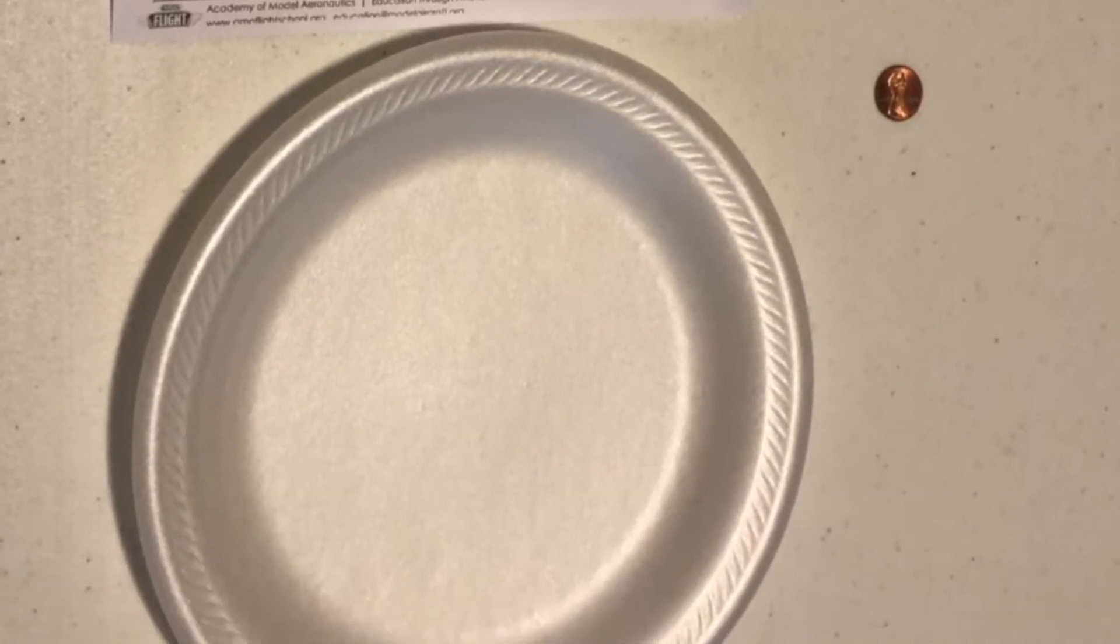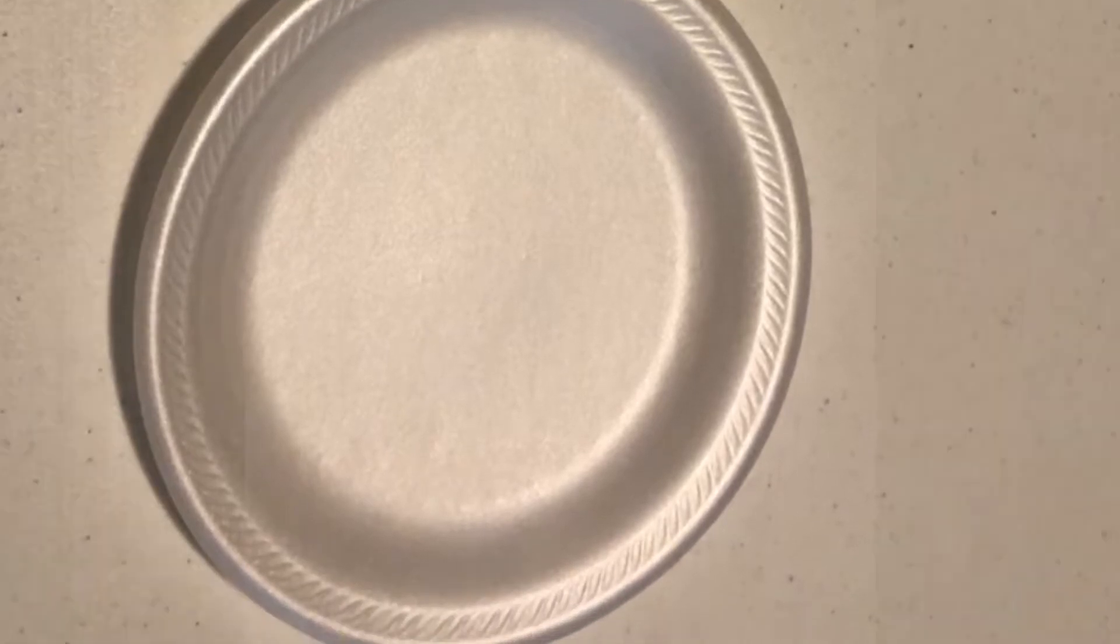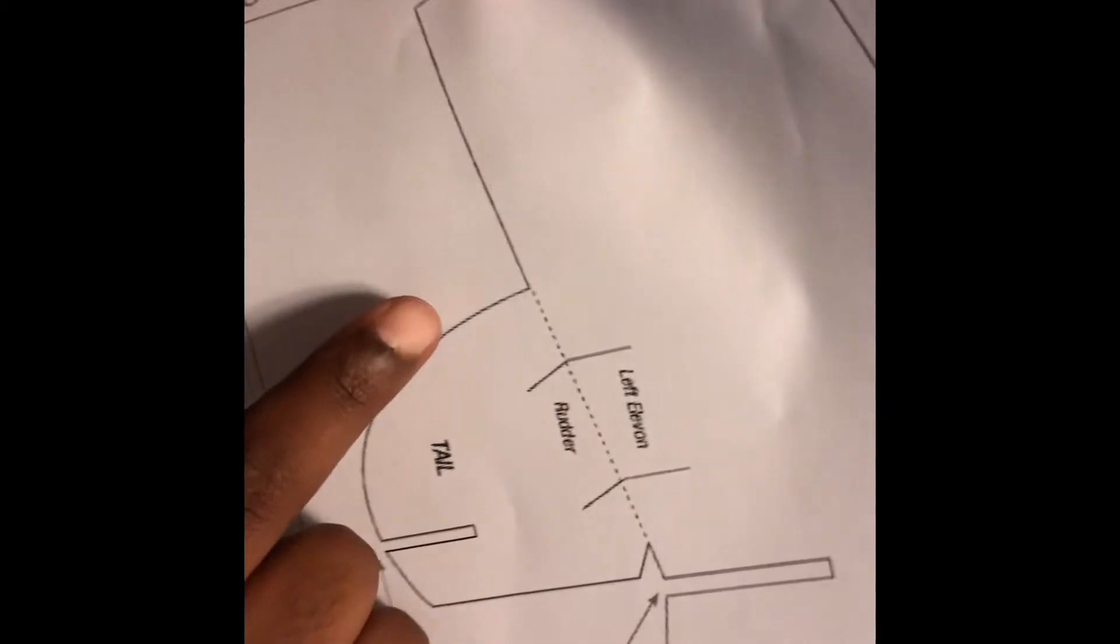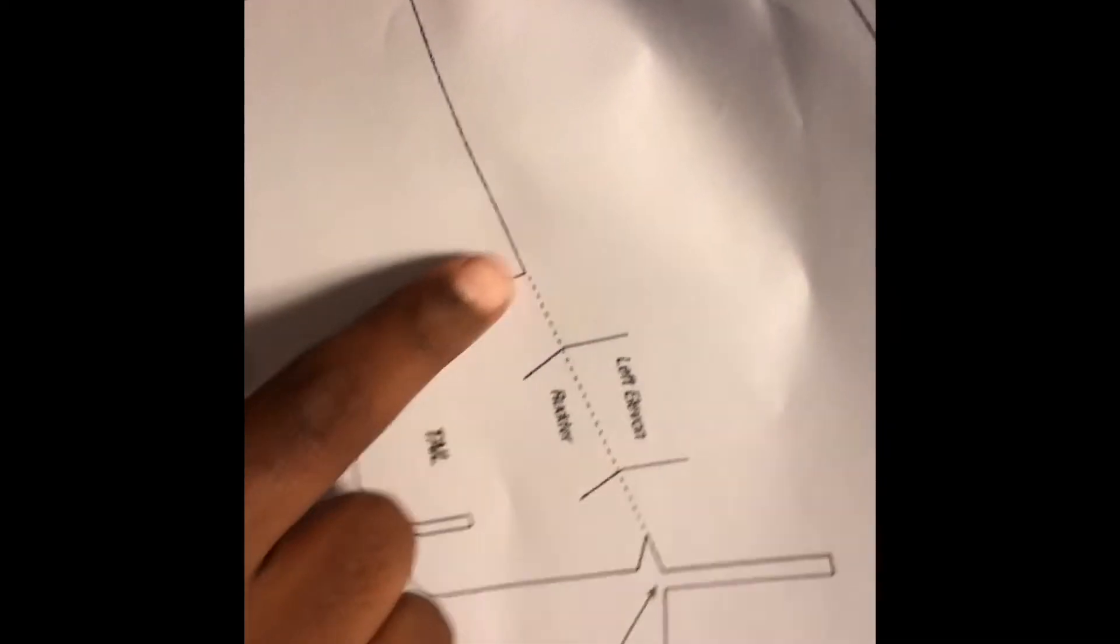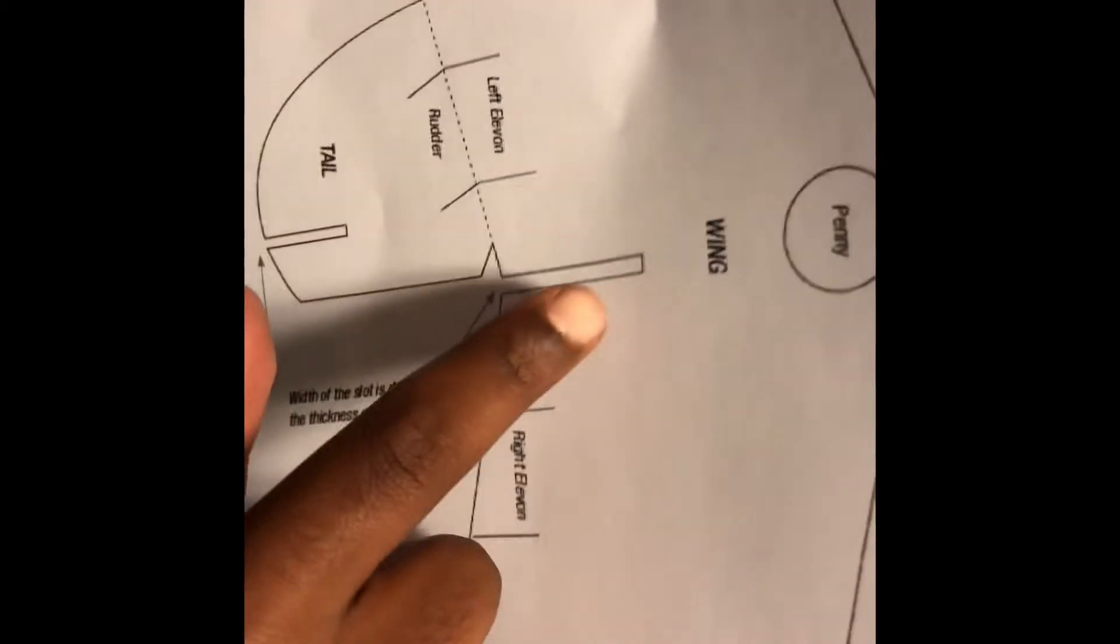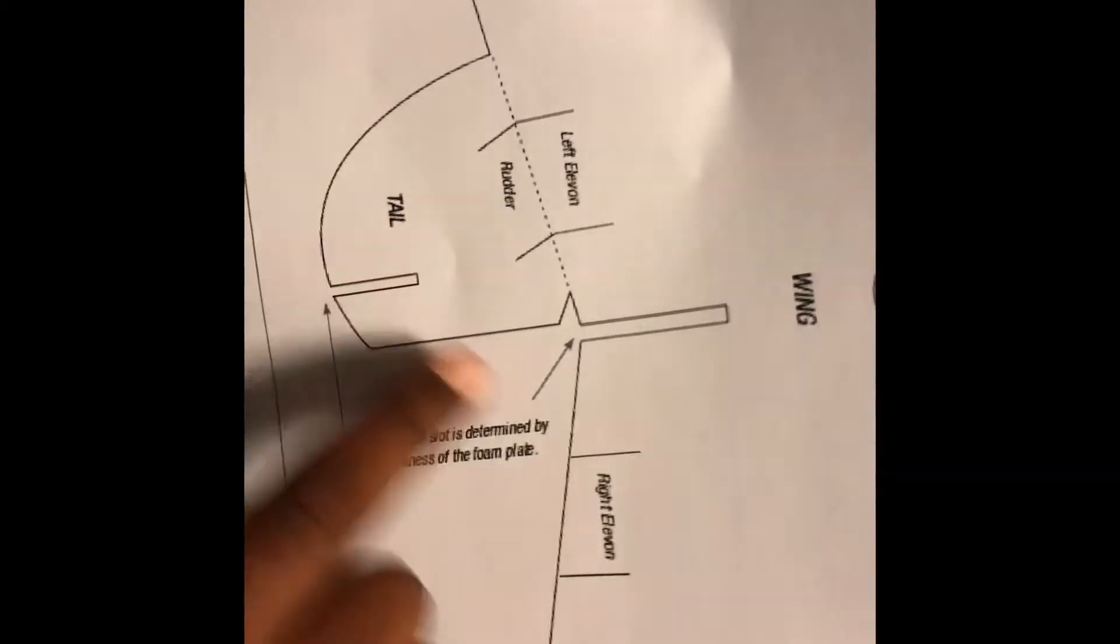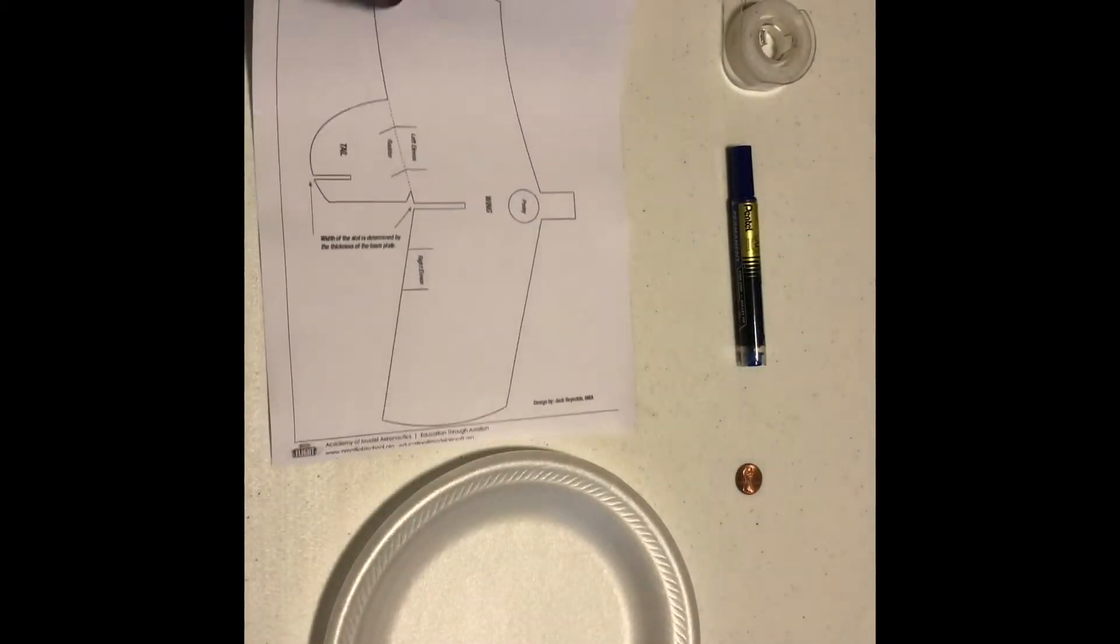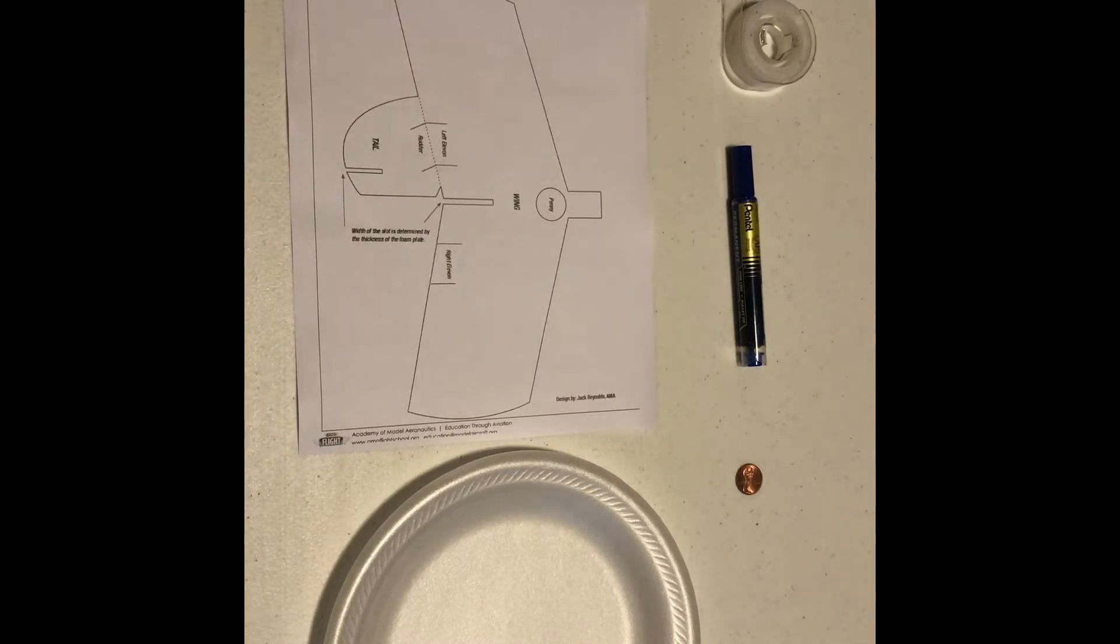The first thing you want to do is cut out this pattern and don't cut over this dotted line. Just cut out the whole thing and keep these slots not cut out for now. After we cut out the normal stuff, I'll show you guys how to cut out the slots.